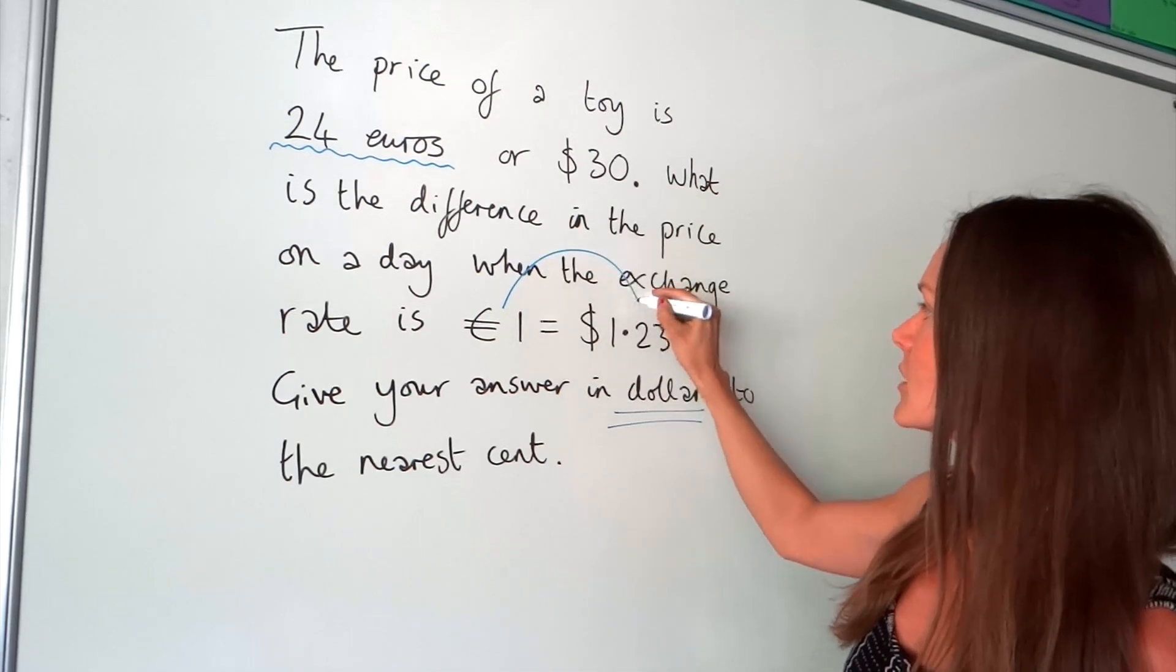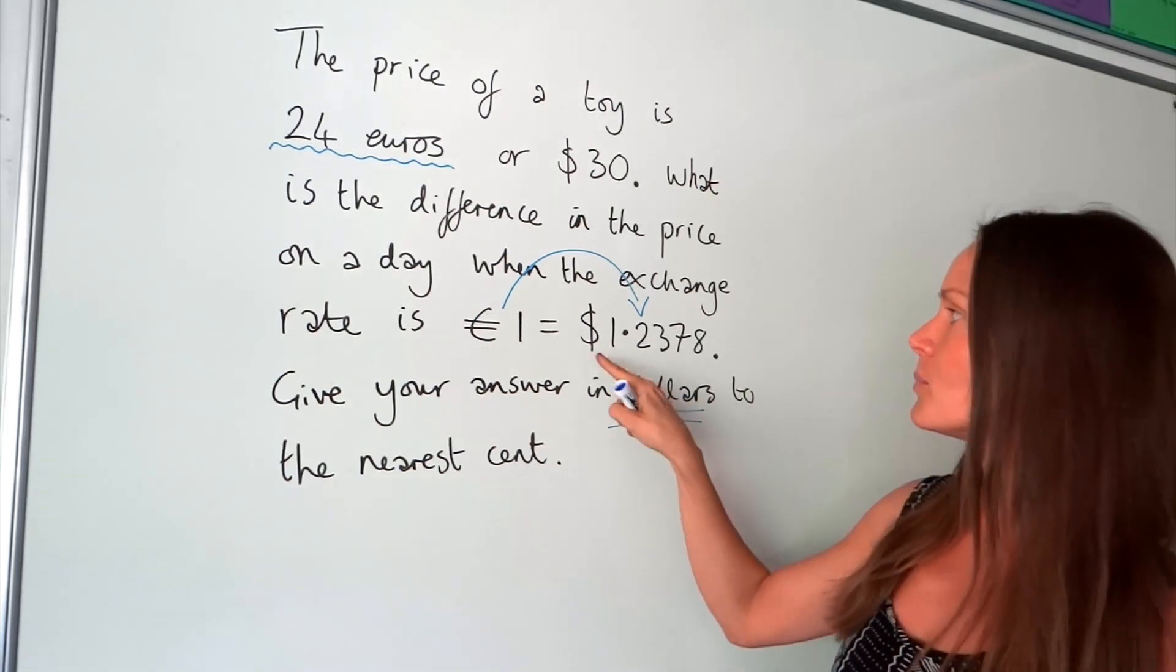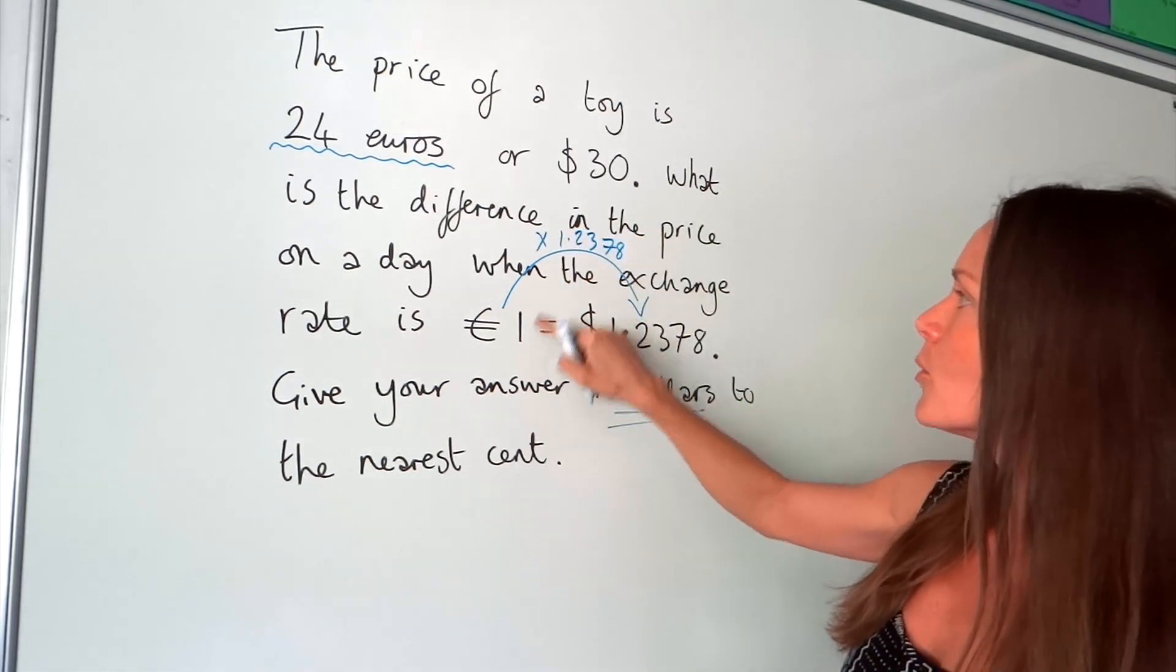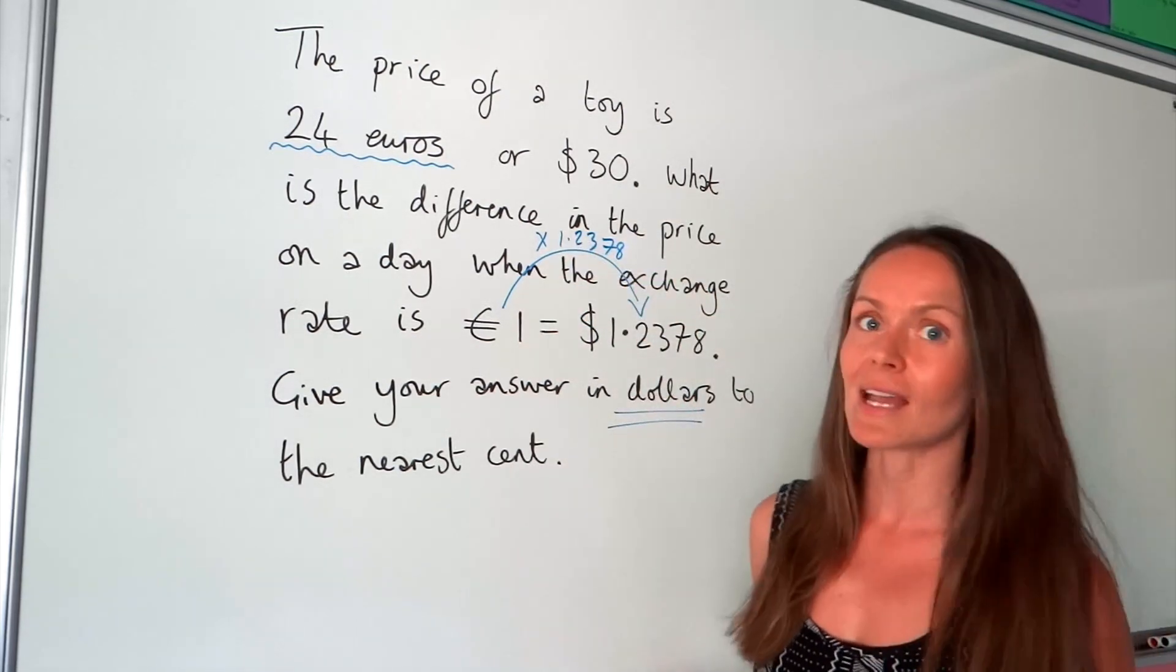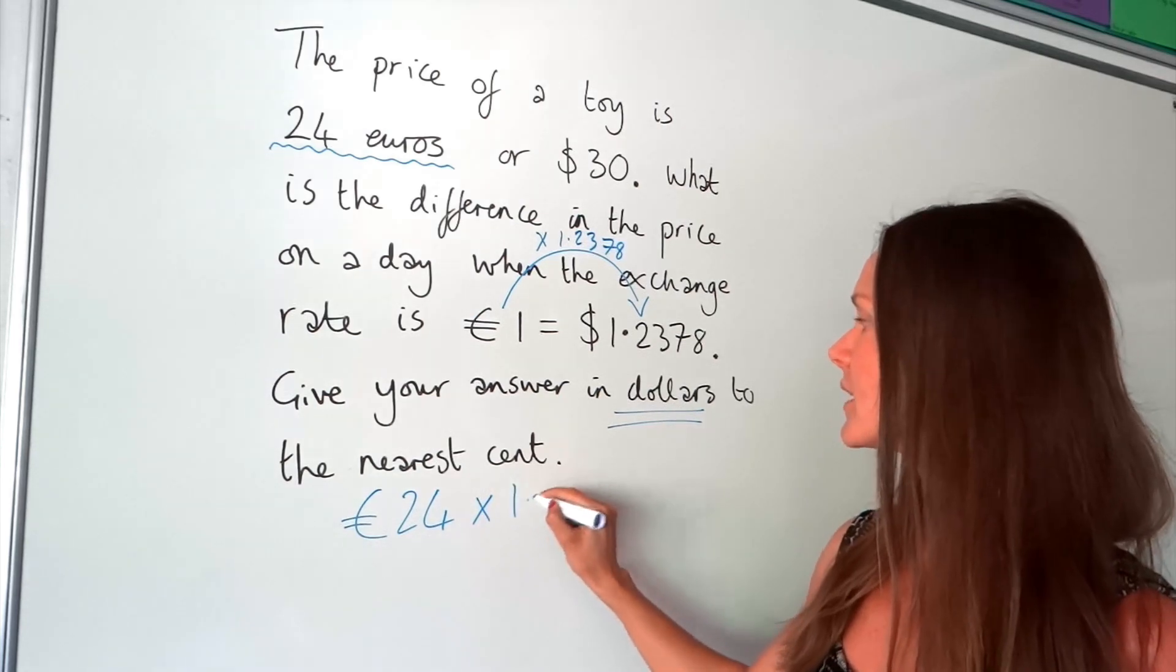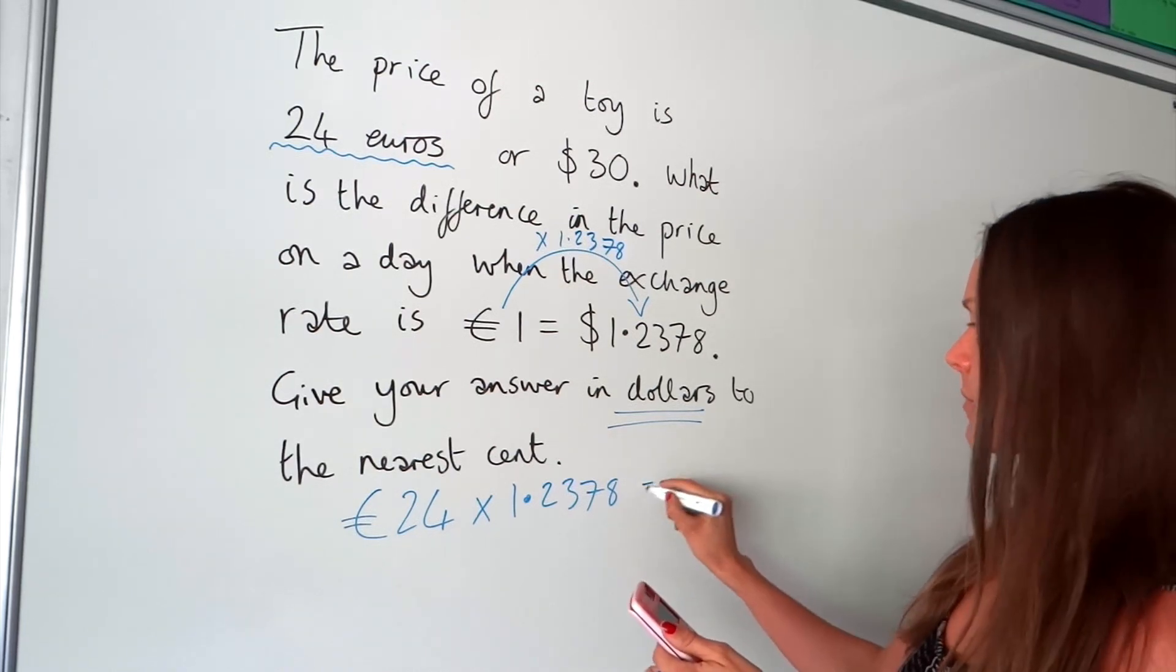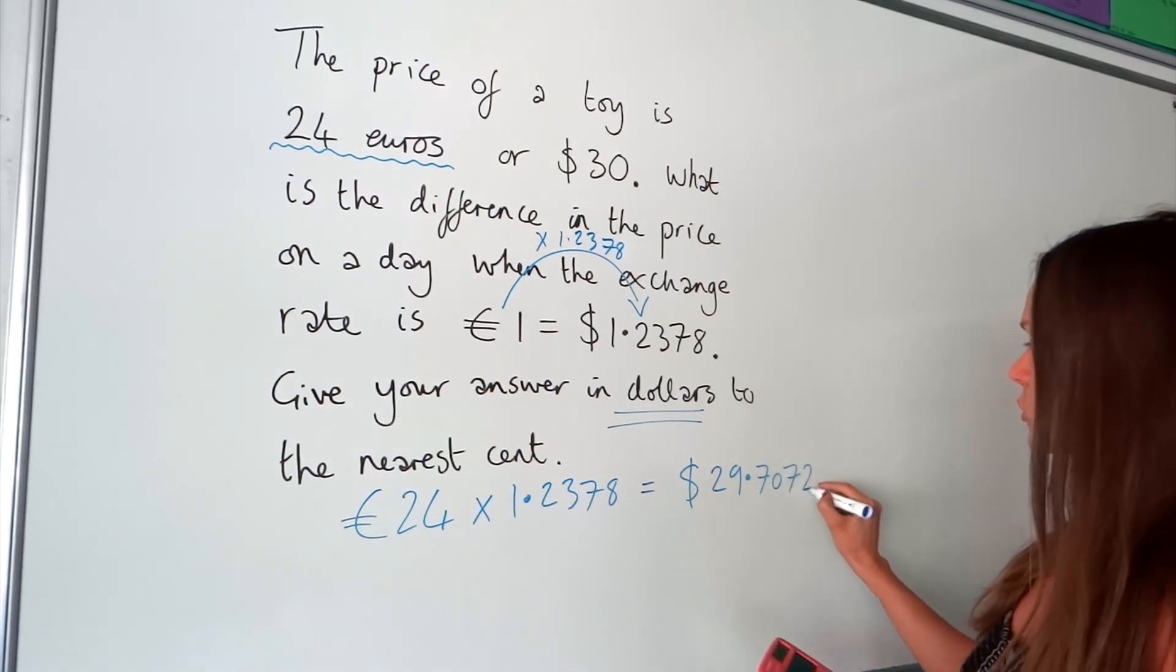Remember, to do this conversion, it's one of two. It's either multiplying or dividing by this number here, the one that's not one. To get from the number one to here, you have to multiply because one multiplied by 1.2378 gives us 1.2378. We have to do the same with our 24 euros. We've got 24 euros and we're multiplying in this question. Pop that in your calculator. And that gives me, remember, it's now in dollars. This is $29.7072.